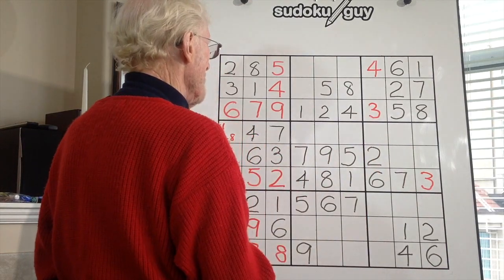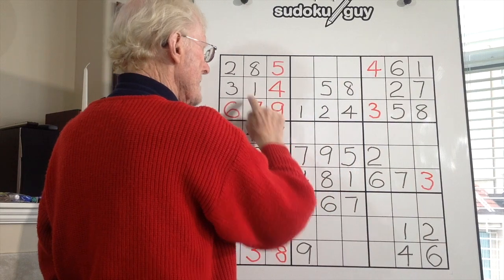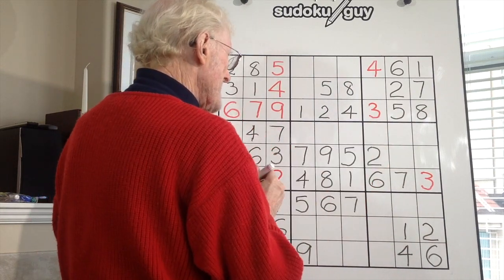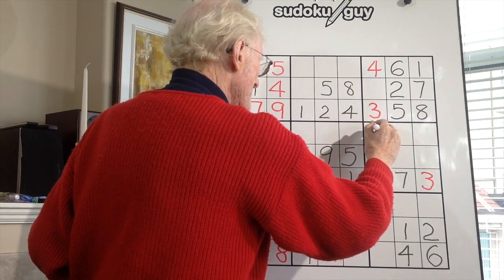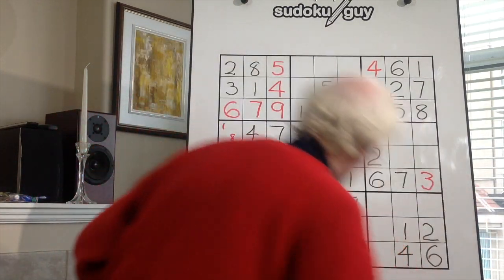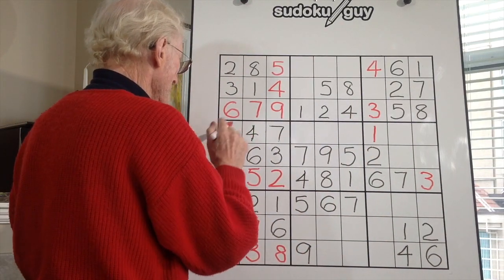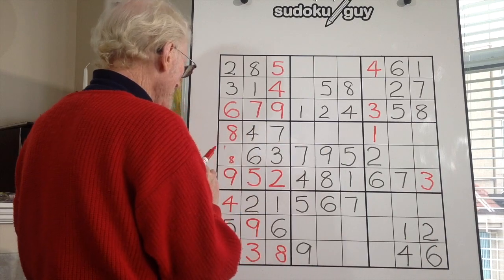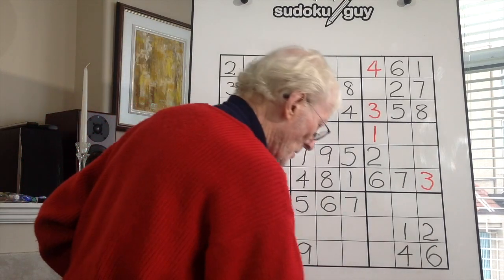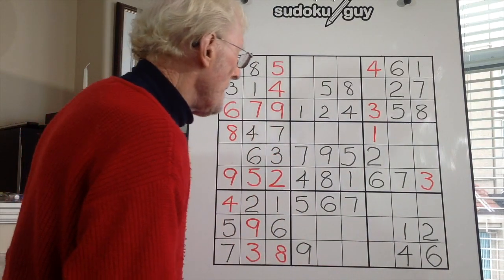We can't have a one there because there's a one there already. The only place a one can go is there. The ramification of that is that this cancels out this one, so this becomes an eight and this becomes a one. Things are really happening — look at the numbers we get just as a result of using this particular technique.